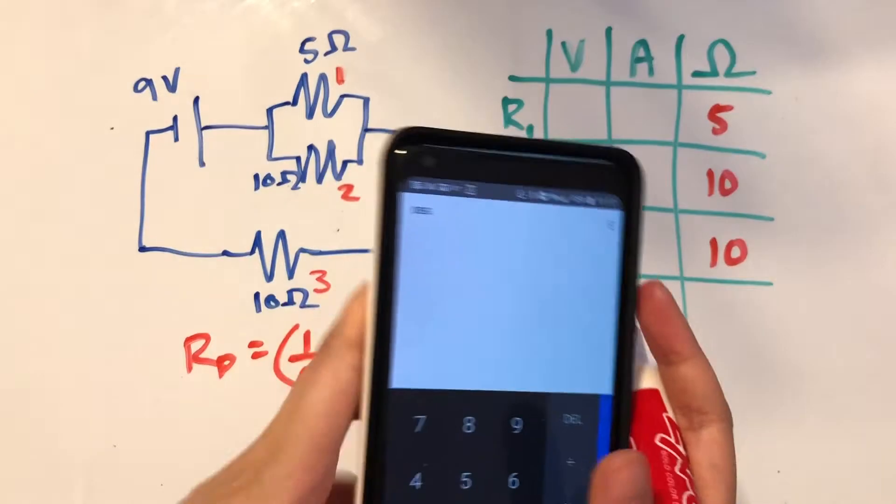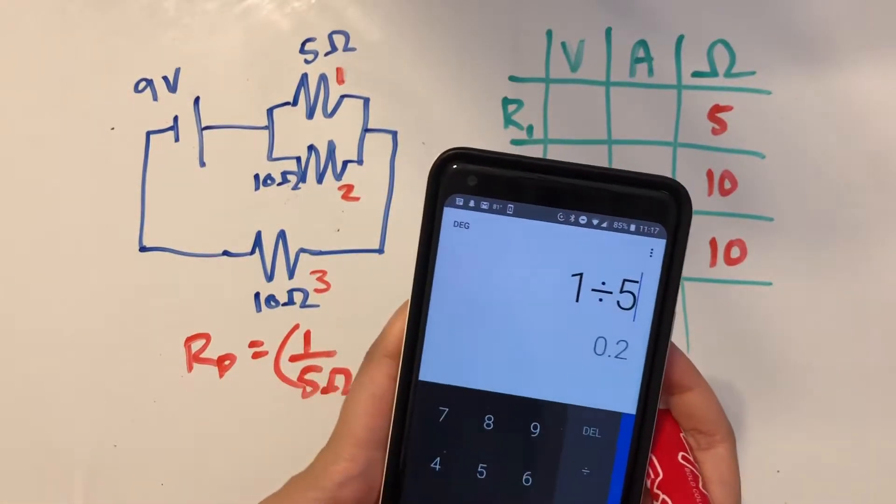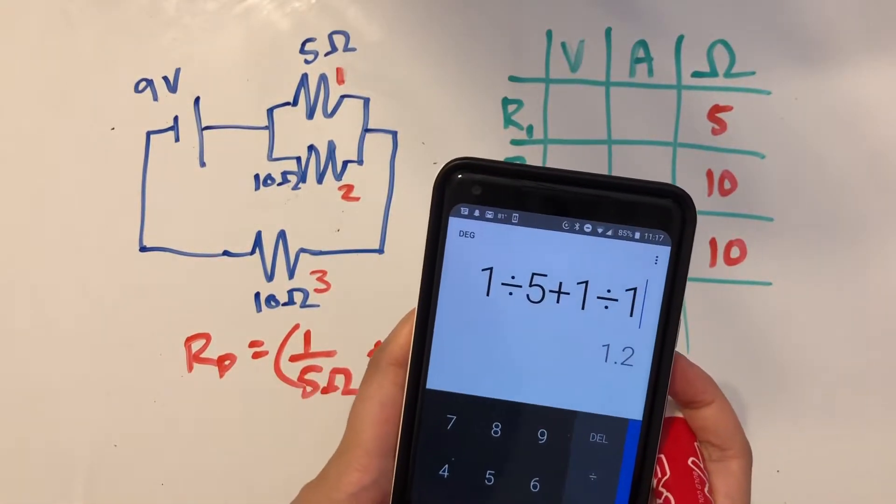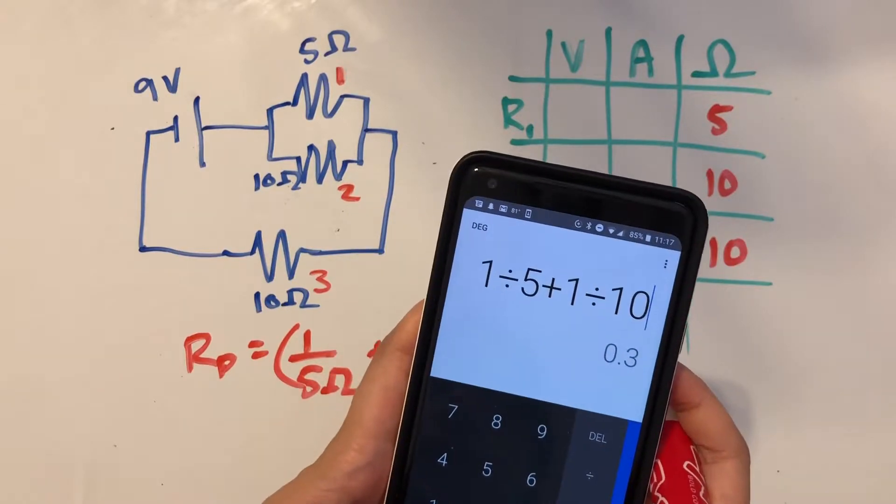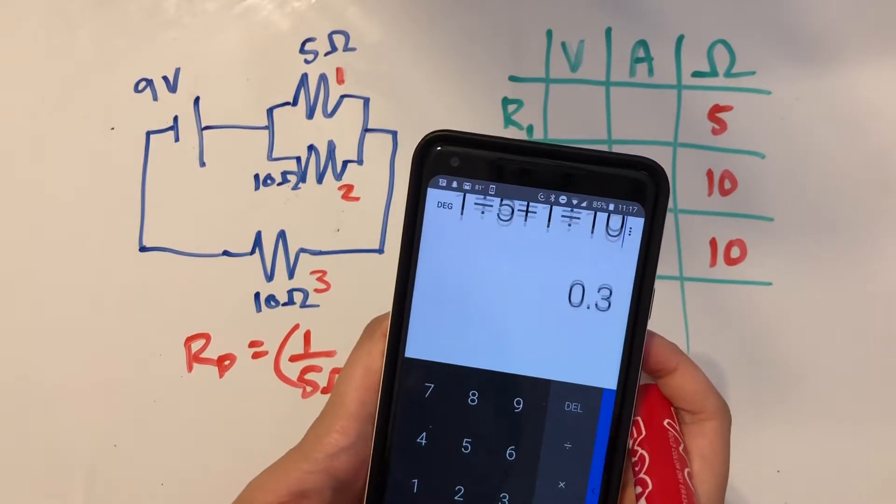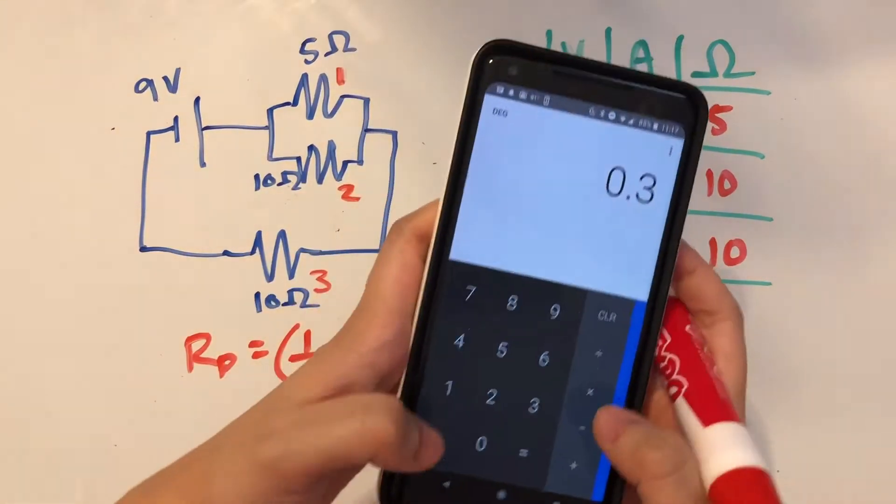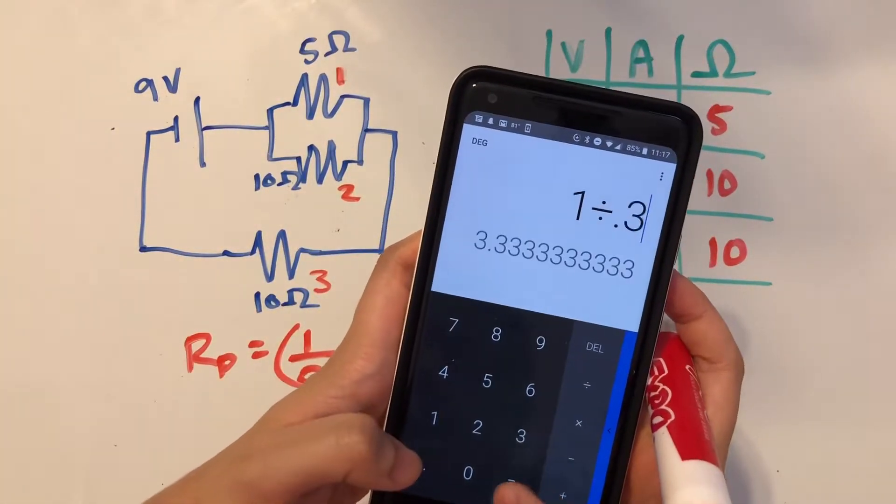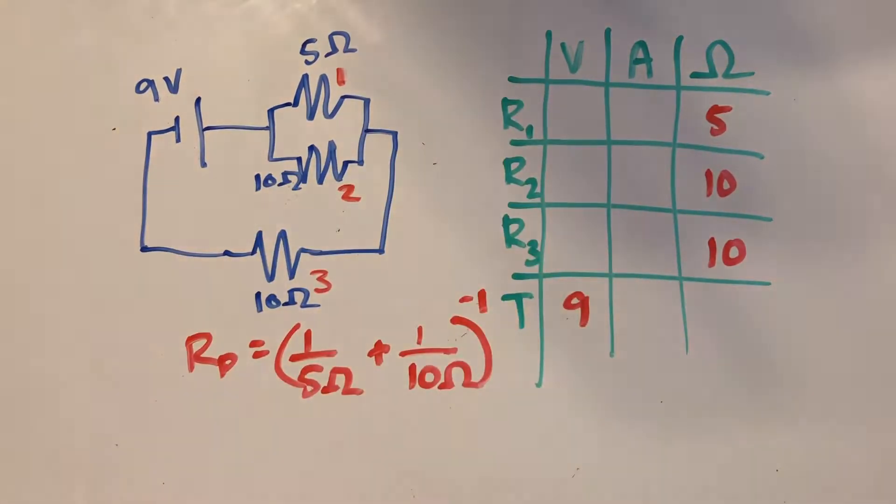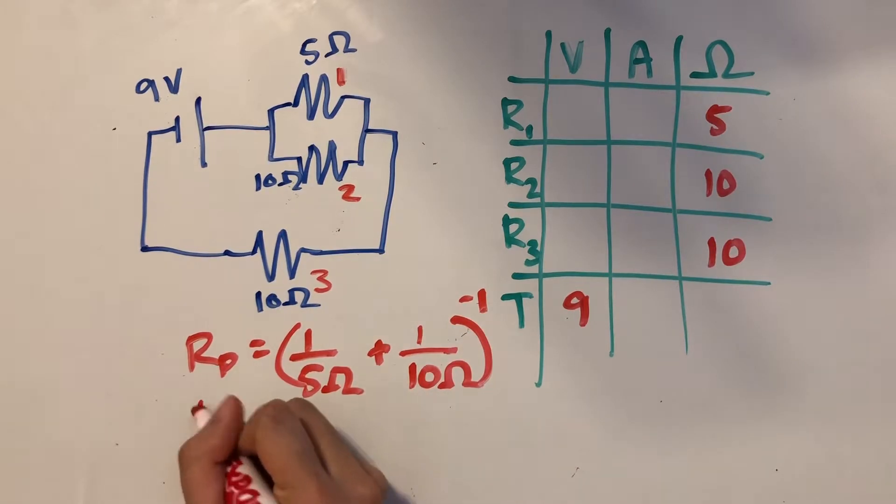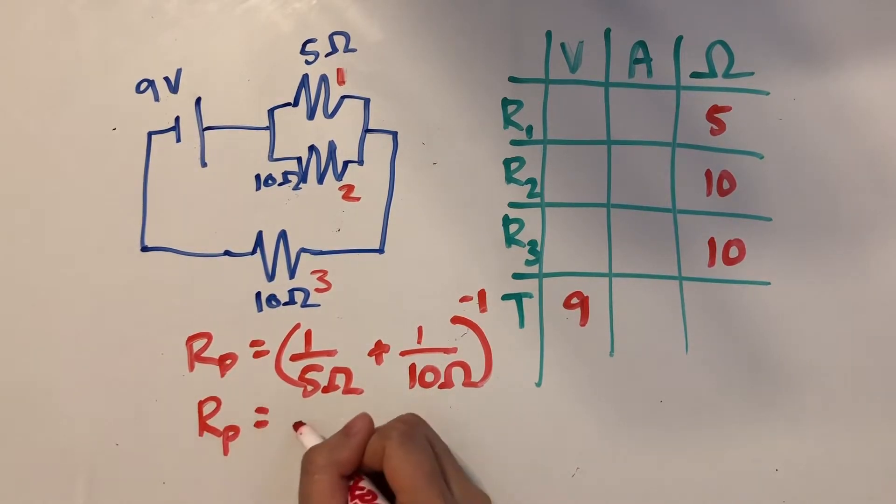So 1 over 5 plus 1 over 10 is going to be 0.3. And when we take the reciprocal of 0.3, we get 3.33. So our parallel equivalent resistance is going to be 3.3 ohms.